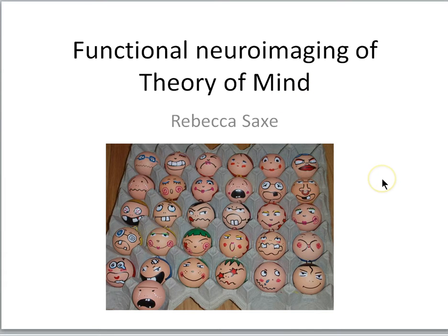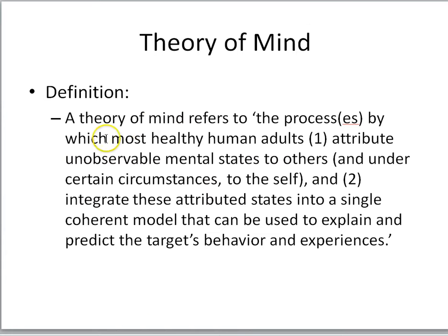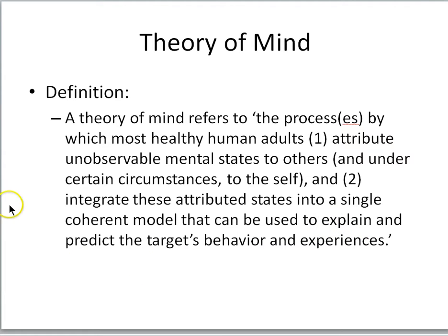Do we have a dedicated brain system responsible for helping us understand the mental states of other people? We'll focus on the work of Rebecca Saxe and her colleagues. Theory of mind refers to the processes by which most healthy human adults: one, attribute unobservable mental states — like beliefs, desires, and intentions — to others and sometimes to the self; and two, integrate these attributed states into a single coherent model used to explain and predict the target's behavior and experiences. This is very useful.